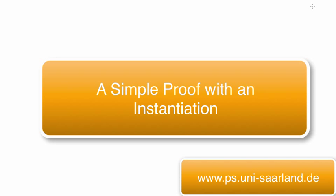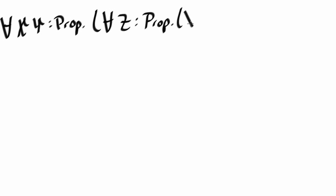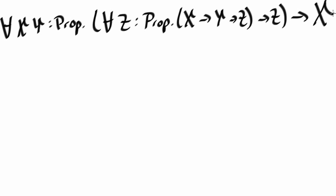In this video we will once again prove a proposition formulated using universal quantification and implication, and look at the corresponding proof term. In this case the proposition is: for all x and y in prop, if for all z in prop, x implies y implies z implies z, then x.